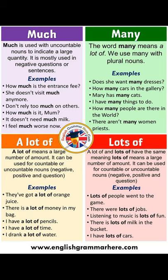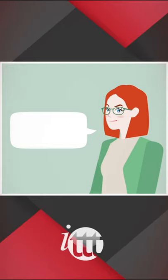How to use 'lots of' in English. 'A lot of' and 'lots of' have the same meaning and can be used interchangeably. 'Lots of' means a large amount and can be used for countable or uncountable nouns in negative, positive, and question sentences. Example sentences: Lots of people went to the concert. There were lots of leaves on the ground. Dancing salsa is lots of fun.